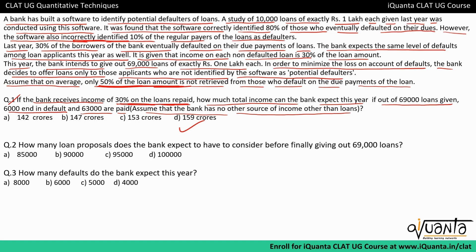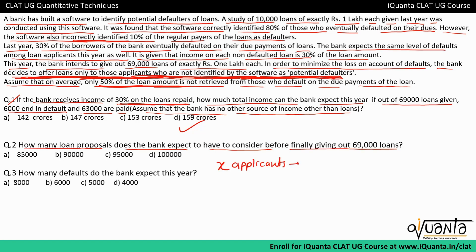Question 2: How many loan proposals does the bank expect to consider before giving out 69,000 loans? Since the bank offers loans only to applicants not identified as potential defaulters, let x be the total number of applicants, from which 69,000 loans are approved.